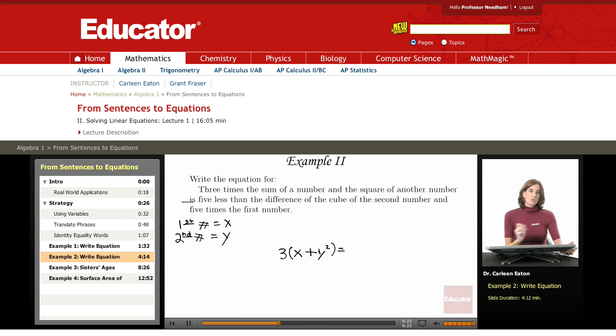Here's where things get a little more complicated. Because what they want is five less than the difference of the cube of the second number and five times the first number. When you see five less than, the temptation is actually to write five minus. But that's incorrect.